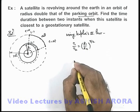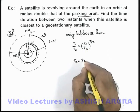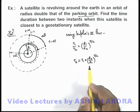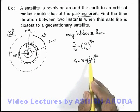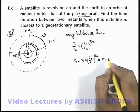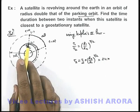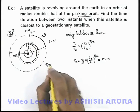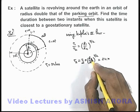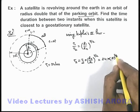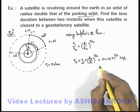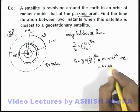The time period of the second satellite can be written as T1 × (R2 / R1)^(3/2). We are given that R2 = 2 × R1, and the time period of the geostationary satellite T1 = 24 hours. Substituting, T2 = 24 × 2^(3/2) hours, which results in approximately 67.88 hours.